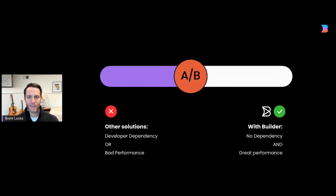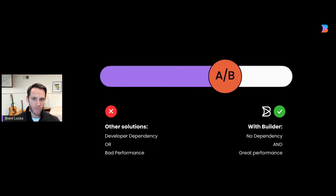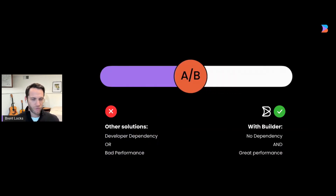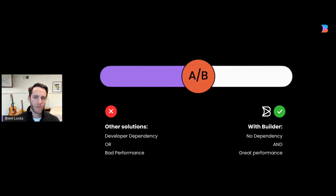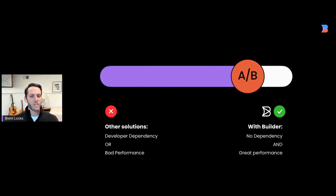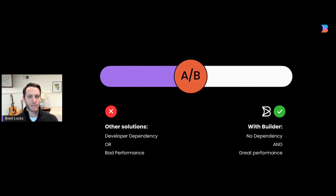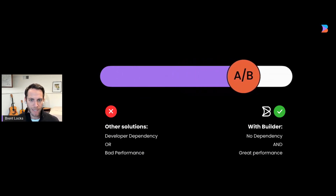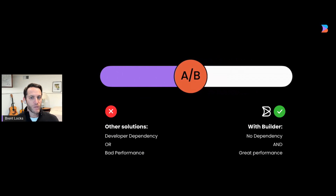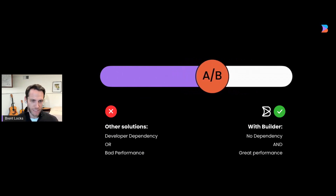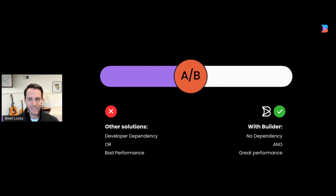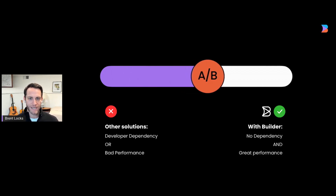With A/B testing, you'll find that current solutions largely fall into two buckets: performant but developer-dependent, or marketing-driven but bad for performance. With Builder, you get the best of both worlds. Marketing can build any experience, the tests are delivered in a performant manner, and once you choose a winning variation, you're done — there's no rebuilding anything. And of course, all the A/B test data can be delivered to any analytics platform or BI system.